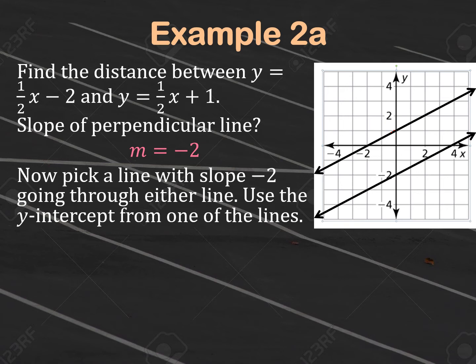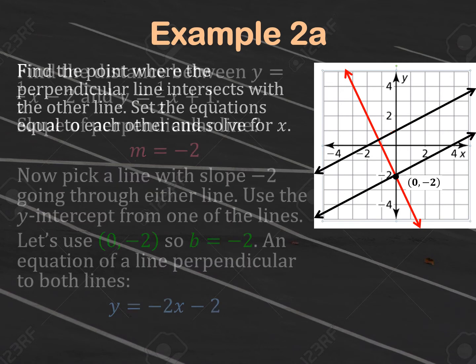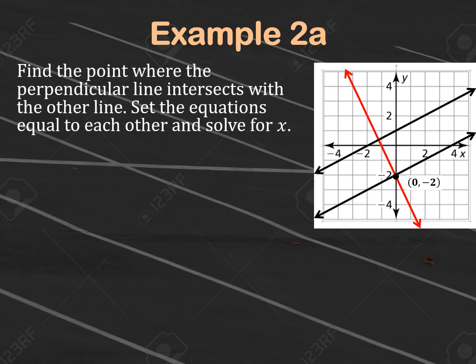We're going to pick a line with slope negative 2 going through one of the lines. The easiest approach is to use the y-intercept from the bottom line: (0, −2). We know the y-intercept is −2 and the slope is −2, so using y = mx + b, the equation of the red perpendicular line is y = −2x − 2. Now we find the point where the red line intersects the other black line by setting the equations equal to each other: 1/2 x + 1 = −2x − 2, and solve for x.